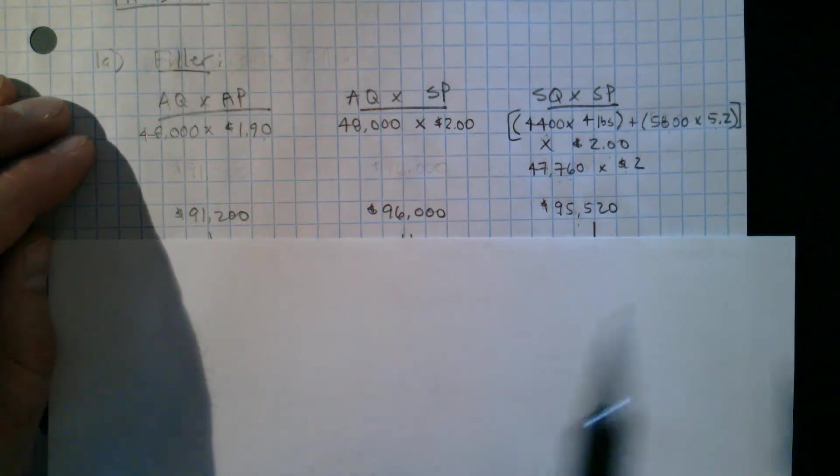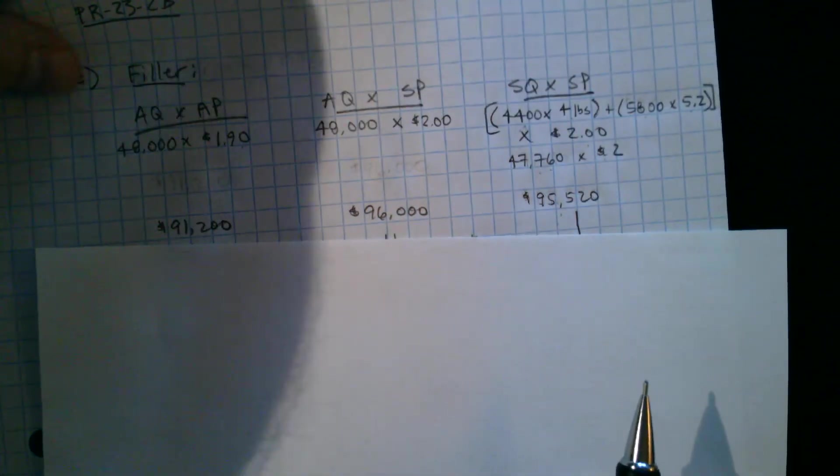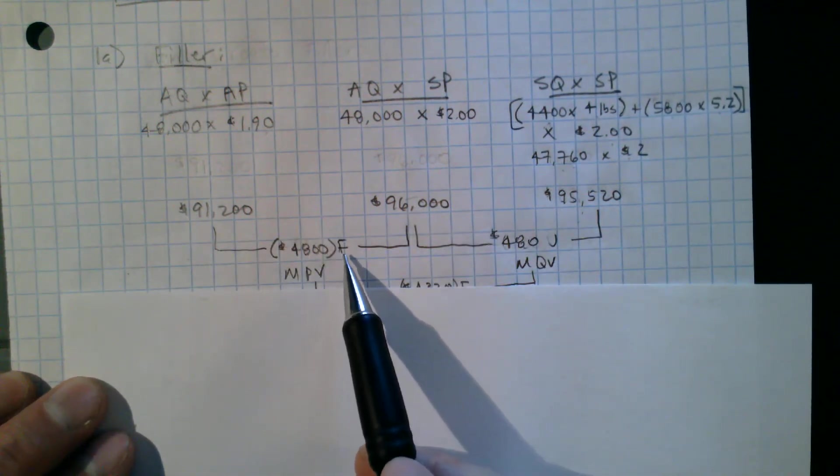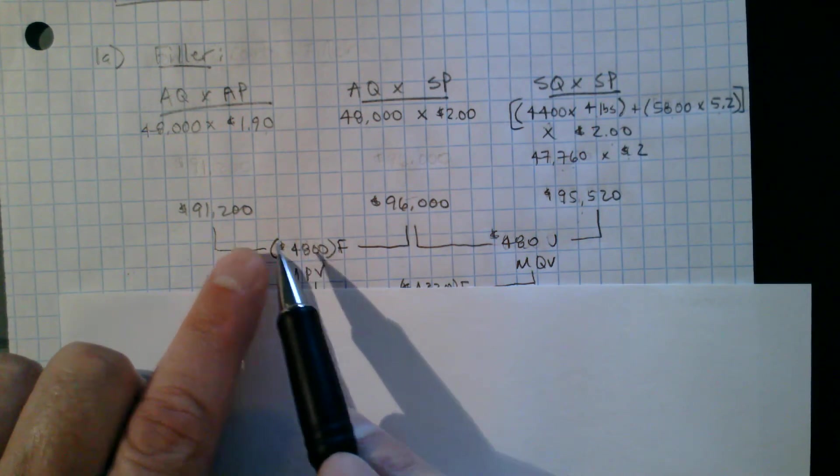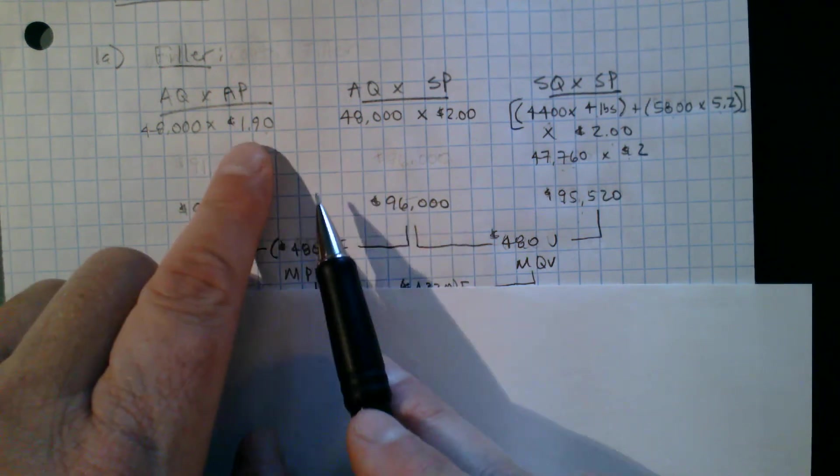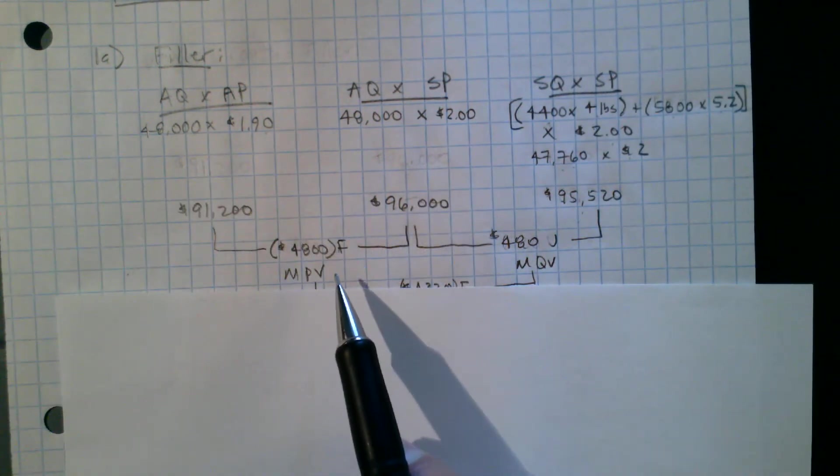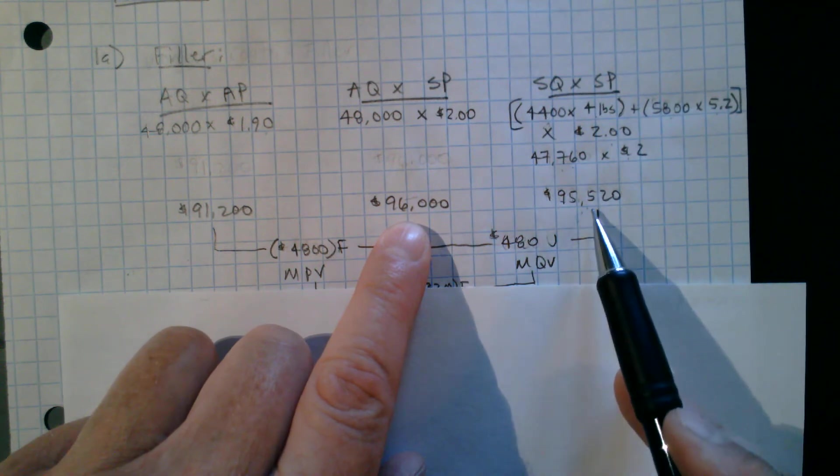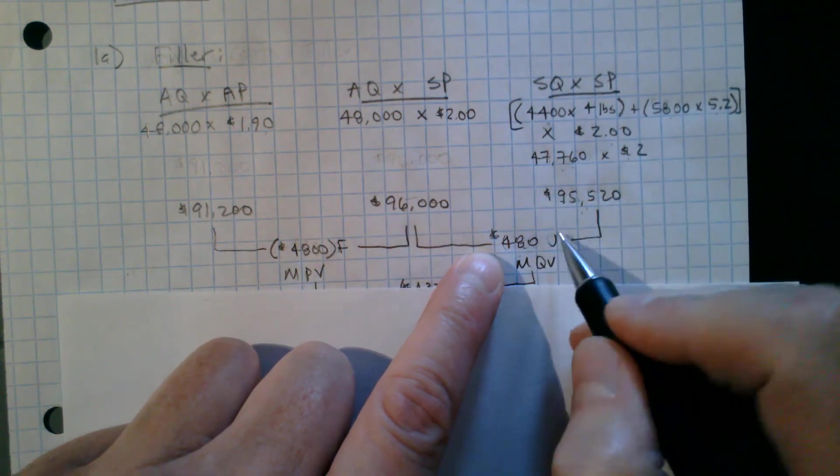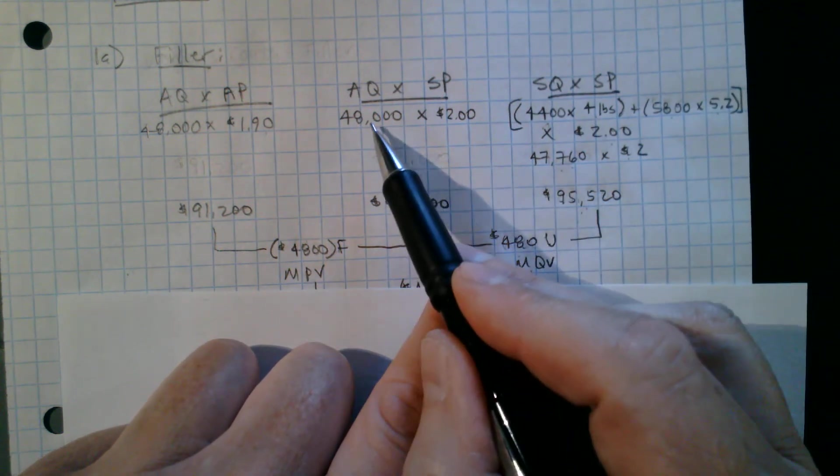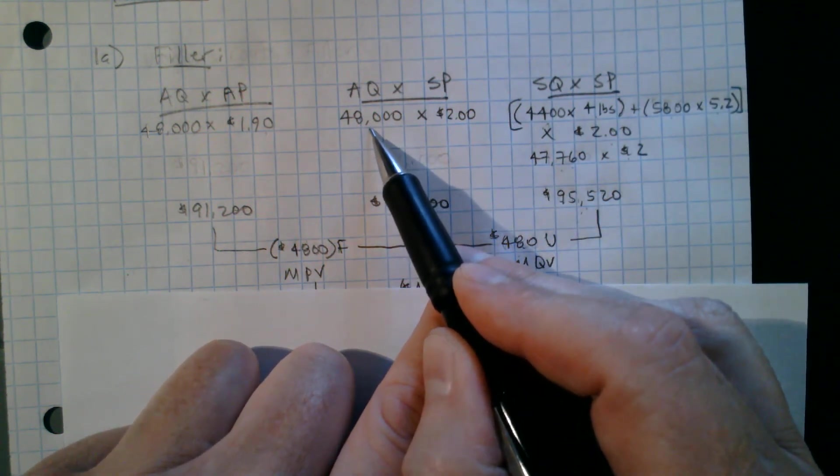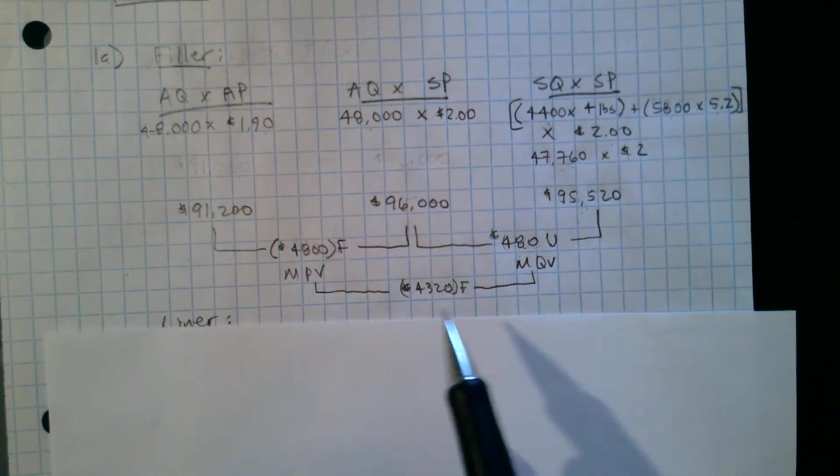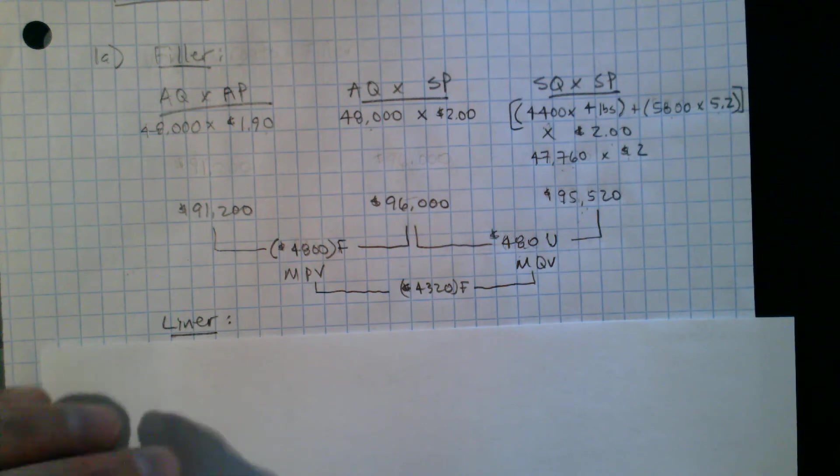So times the $2. So I extend, I do the math here, and I go from left to right. So $91,200 minus $96,000, that's a $4,800 favorable variance. Makes sense. It's a negative number because actual is better than what the plan was. $1.90 versus $2, that's good news. Favorable is good news. So that's my material price variance. Over here, $96,000 minus $95,520, that's $480 unfavorable because it's a positive number, which makes sense. We used 48,000 pounds of liner to produce that number of jackets, and we should have used 47,760. That's bad news. Unfavorable. So I can add those together and get a total favorable variance of $4,320.